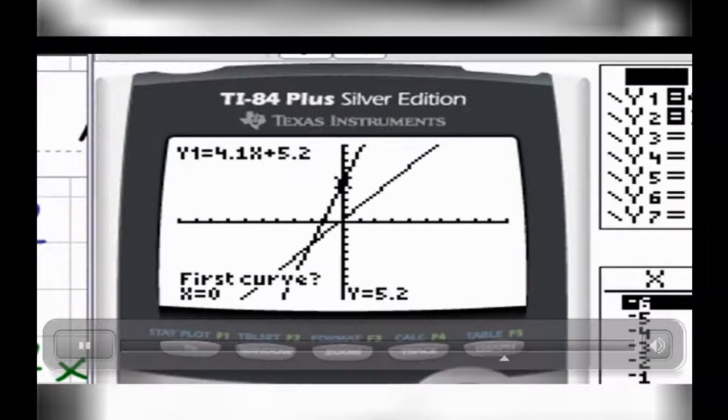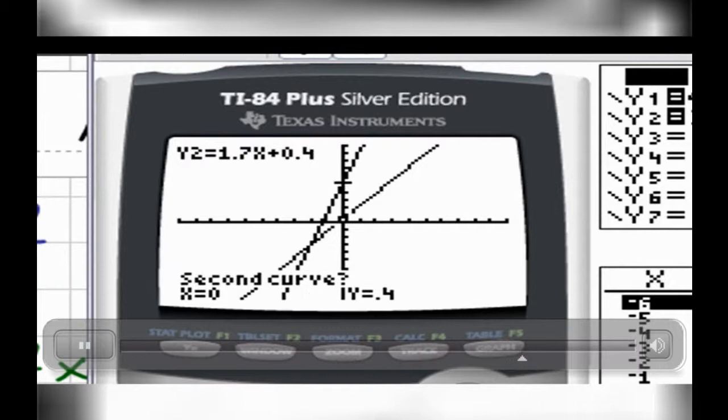And to get the exact value of that location, I'm going to hit my second trace key, and I'm going to go down to option number 5, which is my intersect option. And then ask me, is that the first curve I want to identify? And I say yes, so I'm going to hit enter. Ask me if that's the second line I'm interested in, I'm yes. And guess, so I'm going to hit enter one more time, and it will take me right to the point of the intersection.